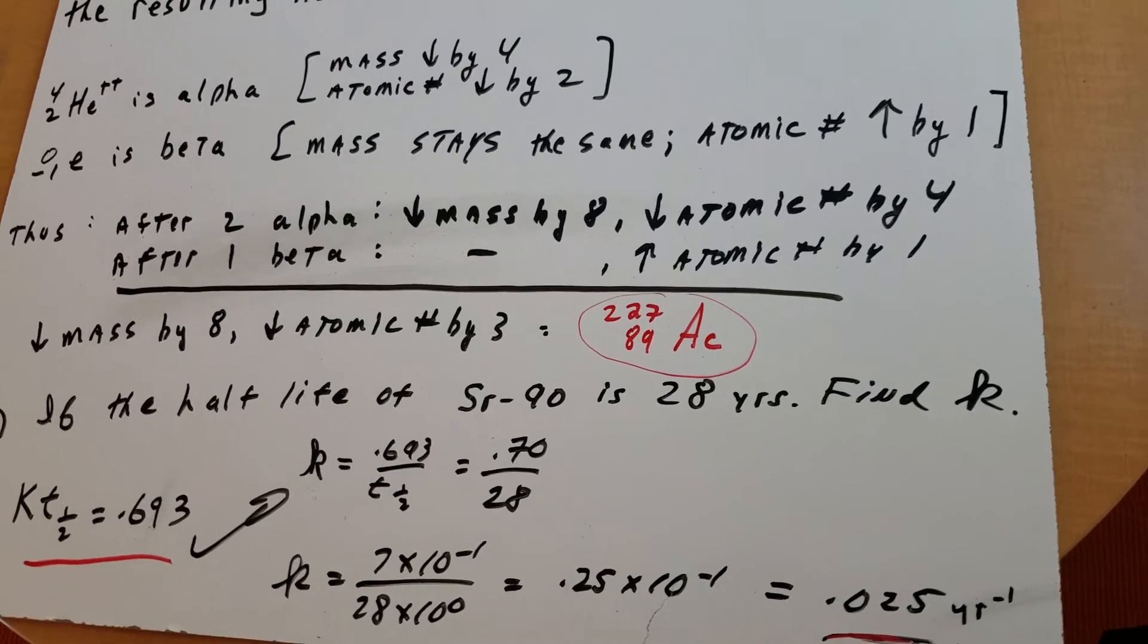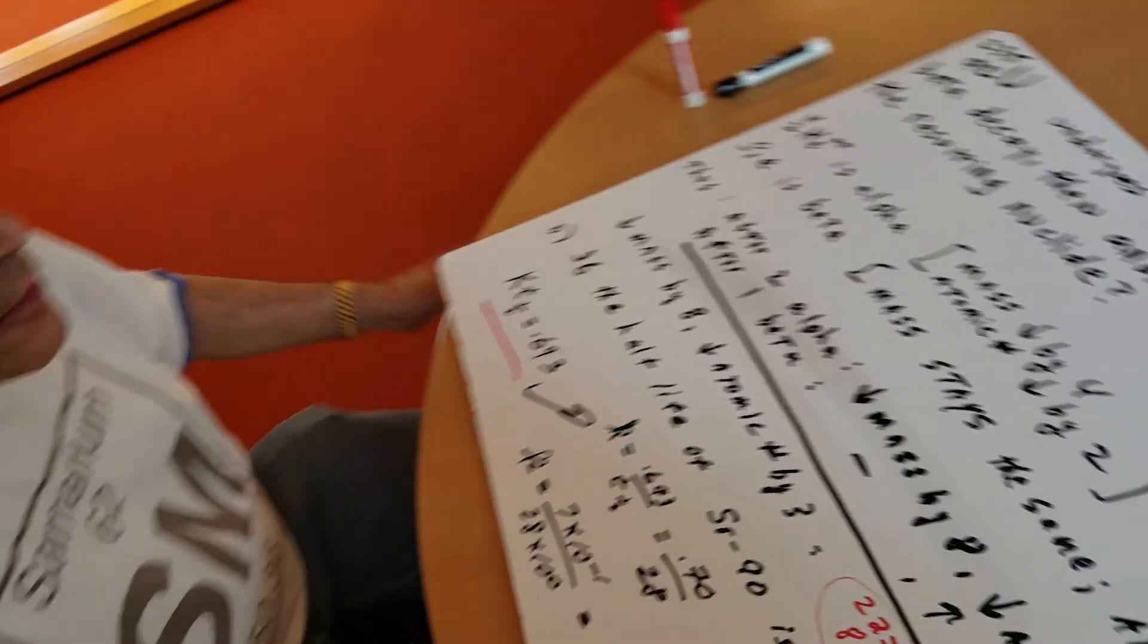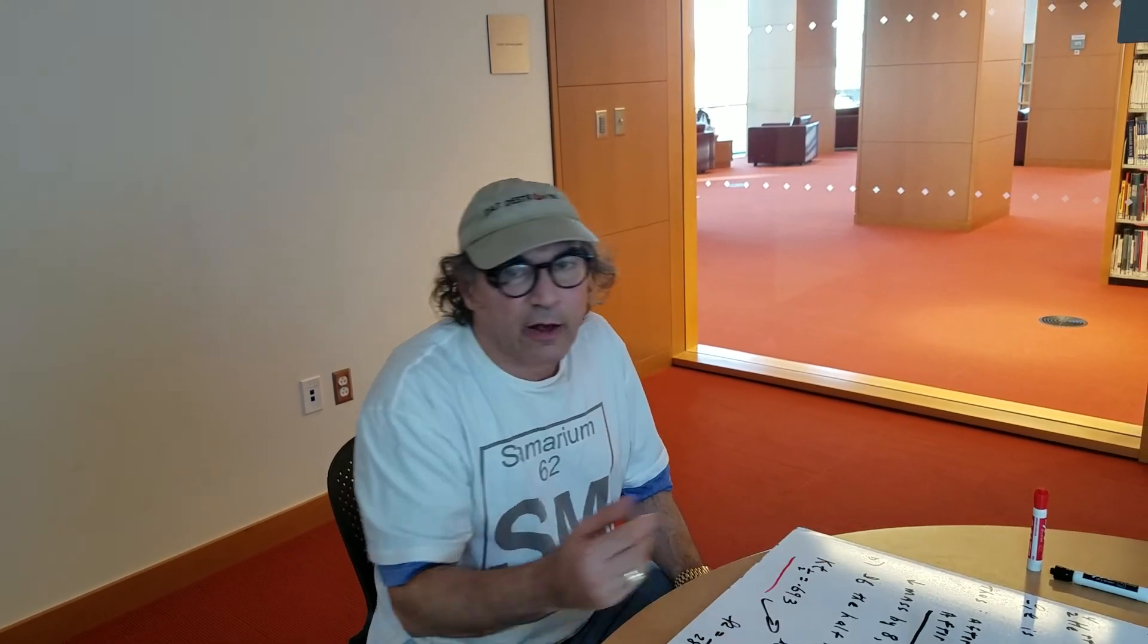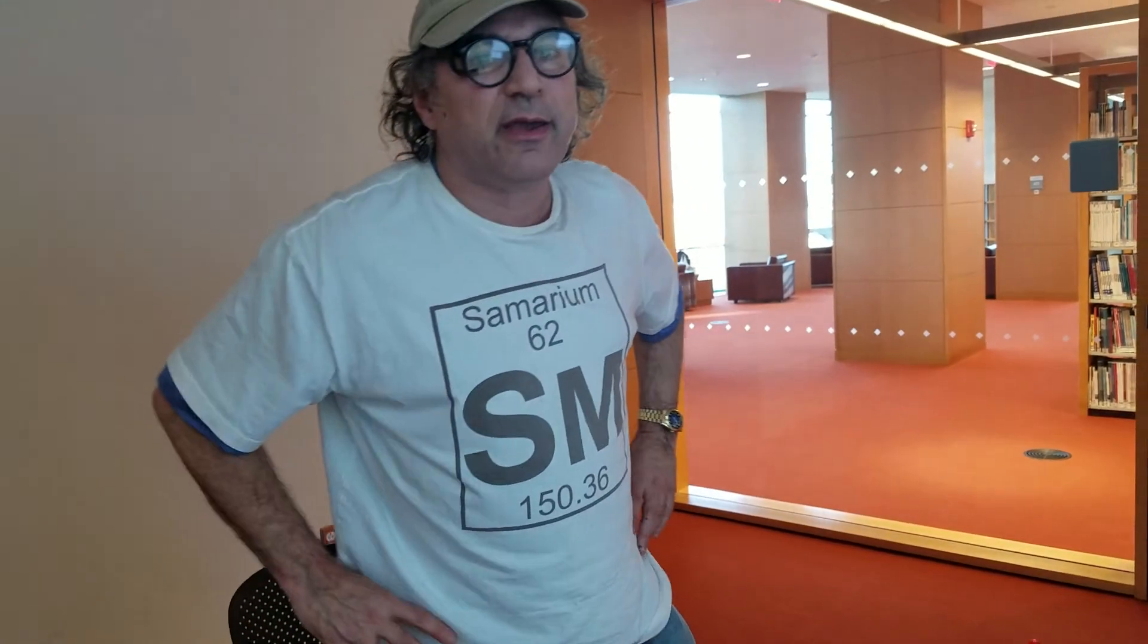Two problems that you see in front of you are must-haves for the DAT exam. So you've got to make sure you know how to do that, and of course you know the theory. What does an alpha decay do? What does a beta decay do? I have questions like this in the destroyer, and you'll be able to practice these. So I hope this gives you a good idea of what to do for these type of decays.